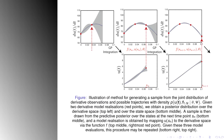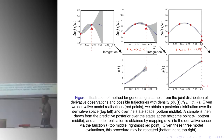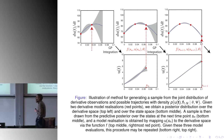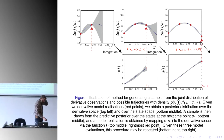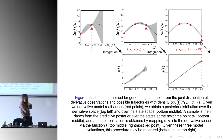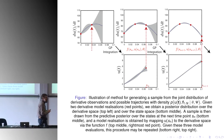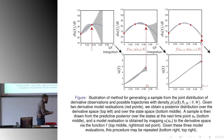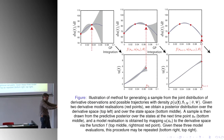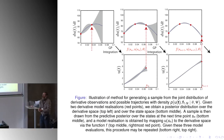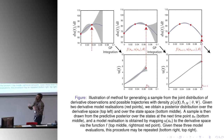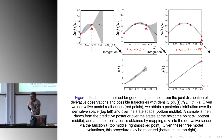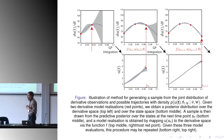That's the forward problem — in machine learning we would call that the generative process. The other problem we are interested in is what is called the inverse problem, a very generic term. The inverse problem is the inverse of the forward problem: we have some observed data, and what we would now like to do is go backwards — infer and invert the process which we believe produced or generated that data.